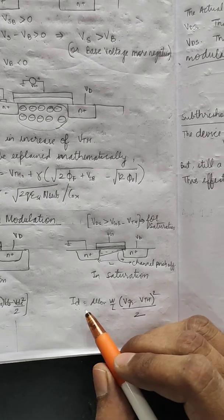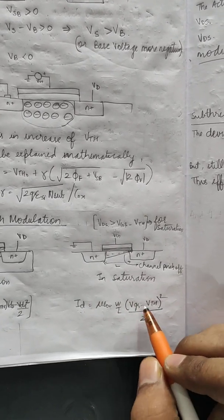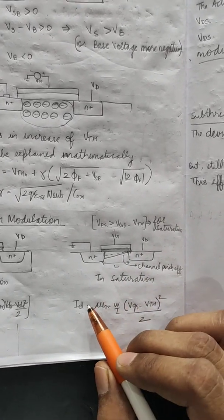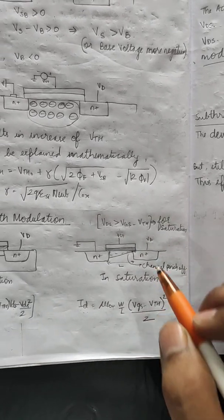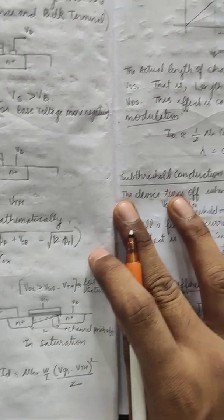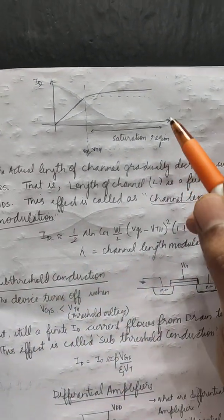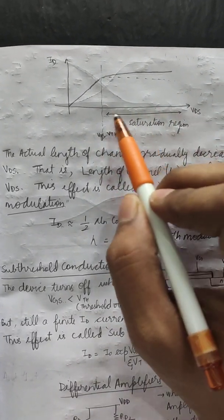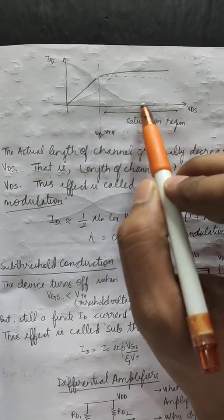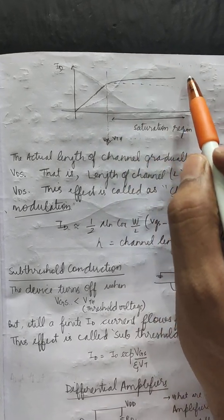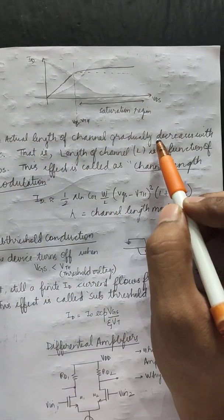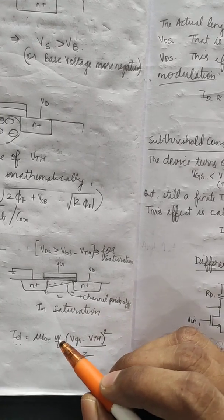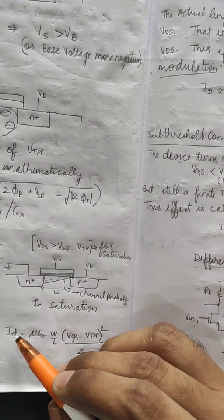But in the saturation condition, the current is no more dependent upon the drain-source voltage. This happens because of the phenomenon of channel pinch-off. Pinch-off takes place and that is the reason ID is no more dependent upon VDS in saturation. But in the practical scenario, even in the saturation region there is a slight variation of ID with a change of VDS. This occurs because the actual length of the channel gradually decreases with VDS — as VDS increases, the channel length decreases, and that is the reason ID increases.